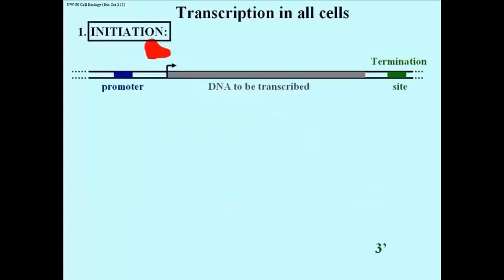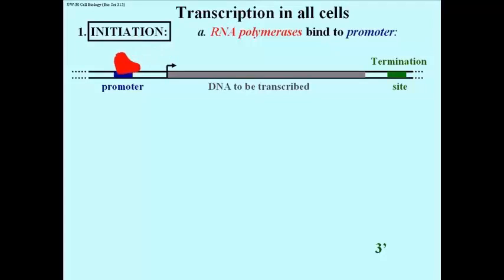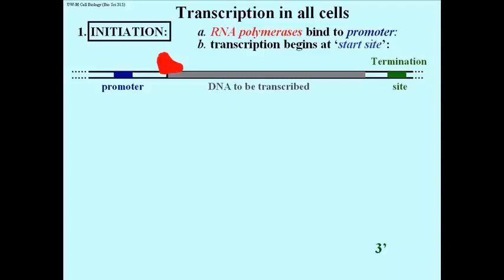This is transcription as it would occur in all cells, and the first step is initiation. What we see here is a double-stranded DNA — two lines representing two strands of DNA to be transcribed. There is a promoter to the left in blue, a right arrow representing the start site of transcription, and then this red RNA polymerase. The RNA polymerase binds to the promoter, recognizes the sequence of the promoter, and is thereby positioned at the start site of transcription.